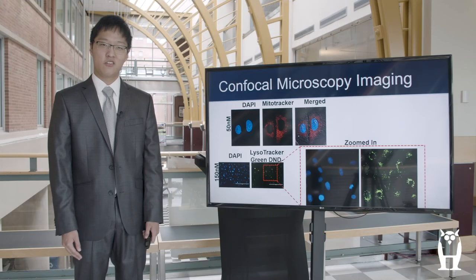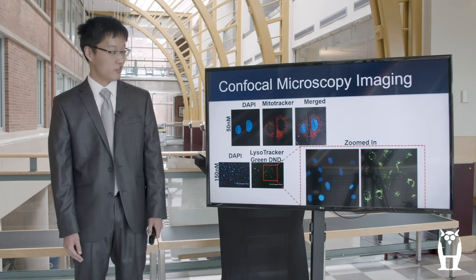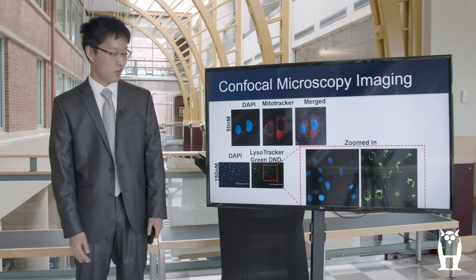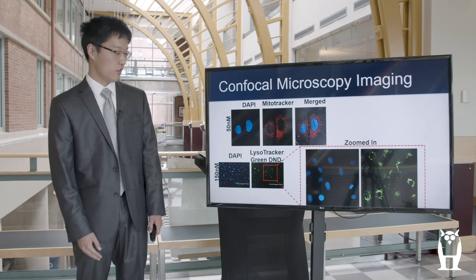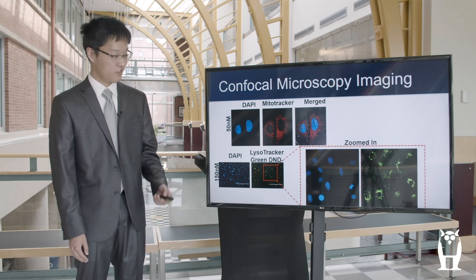This is what I would have done had I not been in an online format this summer. These are some images of fluorescent labels in different cancer cells. These are different dyes: DAPI binds to DNA and labels the nucleus, MitoTracker labels the mitochondria, and LysoTracker labels the lysosomes — along with merged images. This allows us to see where in the cell the nanoparticles are going based on these fluorescent dyes.